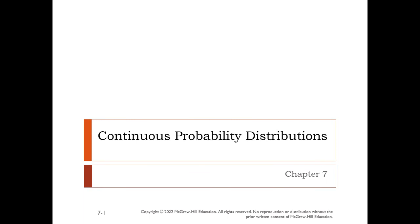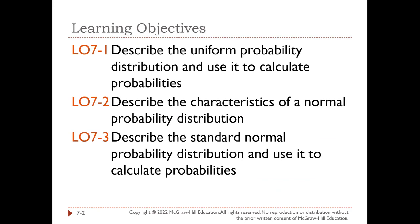Hello and welcome to another exciting chapter in Business Statistics, where we tackle Chapter 7 on Continuous Probability Distributions. In this chapter, we're going to look at three continuous probability distributions: the uniform probability distribution, the normal probability distribution, and the exponential — which happen to be our three learning objectives. We're going to start with the uniform probability distribution and use it to calculate probabilities.